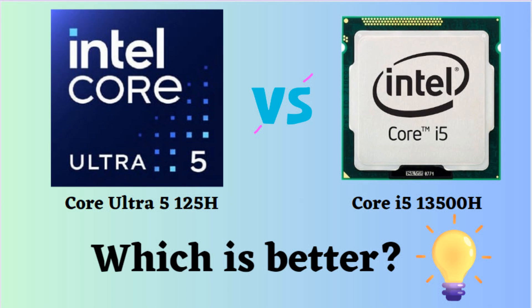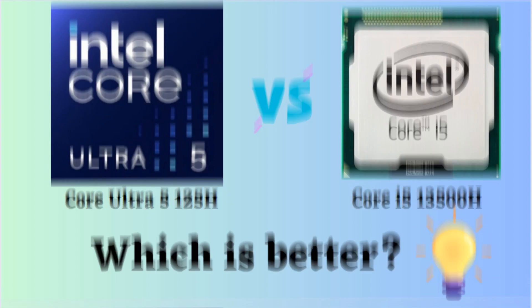In this video, I will compare the Intel Core Ultra 5 125H and the Intel Core i5-13500H, highlighting their differences and then provide a conclusion to help you determine which one is the better choice. Both of these processors are from Intel, but they belong to different generations and have different architectures. So let's examine their variances.